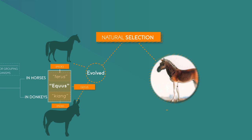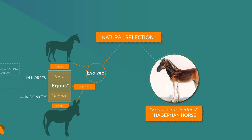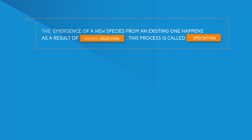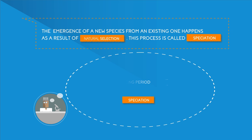These two species both evolved through a process of natural selection from a common ancestor called Equus simplicidens, or the Hagerman horse. The emergence of a new species from an existing one happens as a result of natural selection. This process is called speciation.